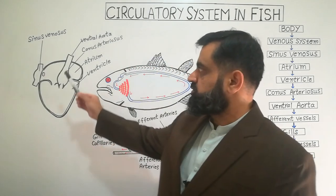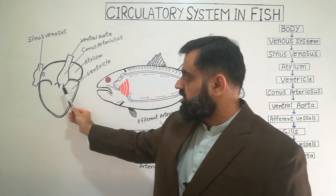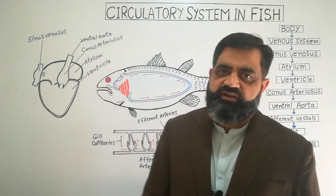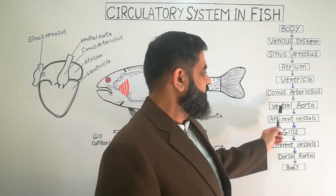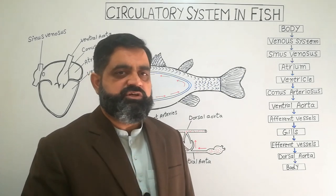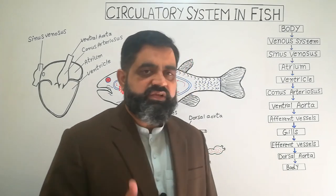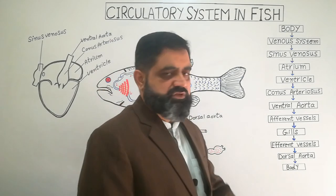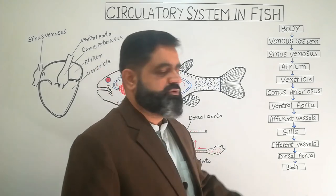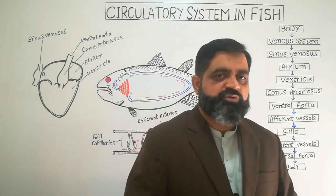From the ventricle, blood moves into the conus arteriosus, and from there into the ventral aorta. The ventral aorta carries blood toward the gills via afferent arteries. Afferent arteries take deoxygenated blood to the gills where oxygenation takes place. After oxygenation, efferent vessels take oxygenated blood toward the dorsal aorta. The dorsal aorta then transports oxygenated blood to all different parts of the body, completing the circulatory cycle.